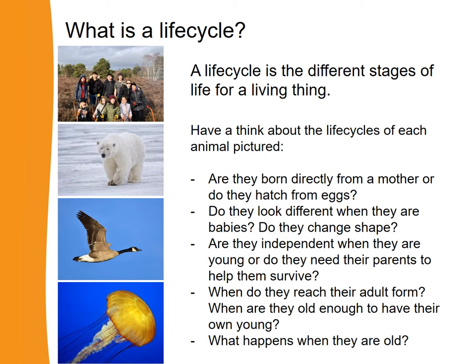What do you think our life cycle is? We're born to our mothers, and when we're young — when we're babies — we're very dependent on adults to help us. We grow from a baby into a child, and adults still provide lots of help until we are an adult. Then we have years of adulthood, we can have children of our own, and we also have a period of old age.